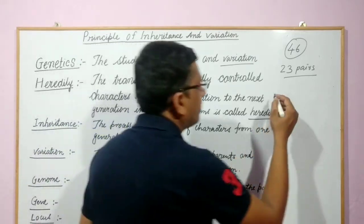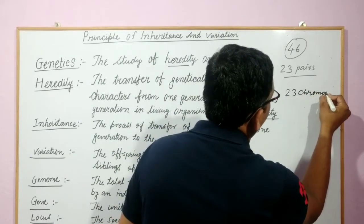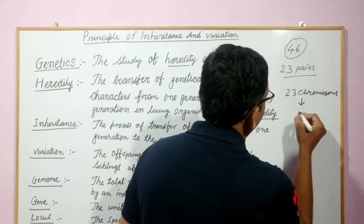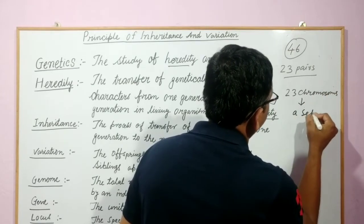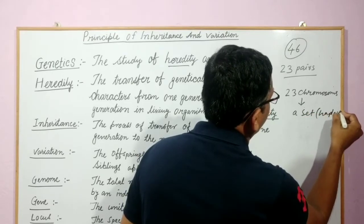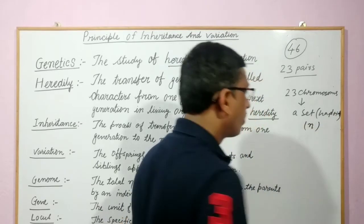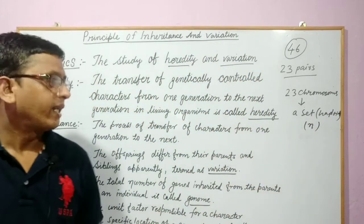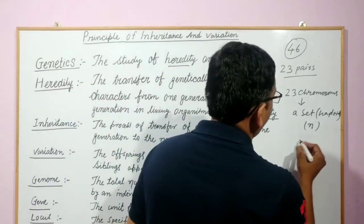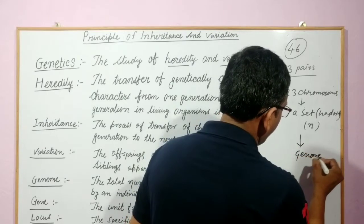So there are two sets of chromosomes, 23 and 23. 23 chromosomes are called a set which is a haploid set and is denoted by small n. And that is equal to your genome.